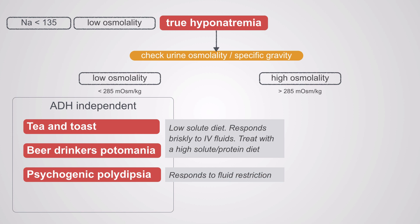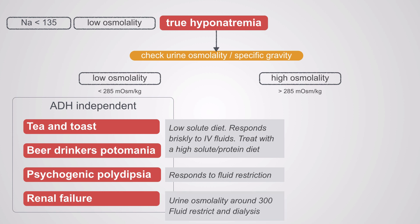Psychogenic polydipsia patients respond to fluid restriction, but if symptomatic they need to be treated with hypertonic saline. Renal failure patients — those on dialysis or with very low urine outputs — will have a urine osmolality close to 300. These kidneys are so sick they can't concentrate or dilute urine, producing urine very similar to serum osmolality. These patients respond to fluid restriction and dialysis.